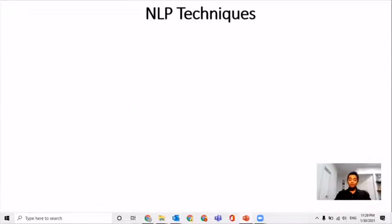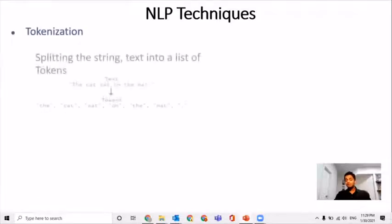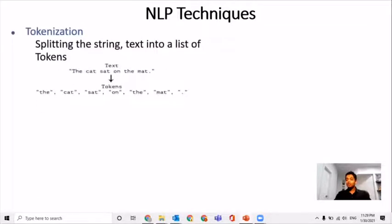Now let's take a look at some of the techniques used in NLP. First, there is tokenization, which takes a sentence and breaks it down into the words that compose it. It assigns a token to the word, so if the word were to appear in another sentence, they would have the same token and would be able to reach more accurate definitions.